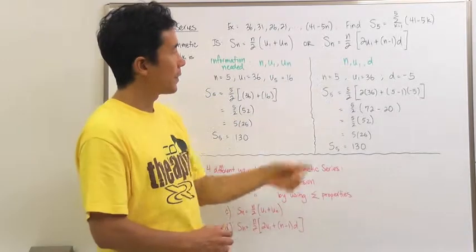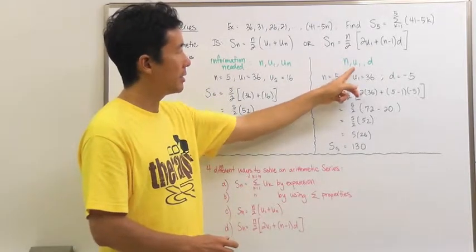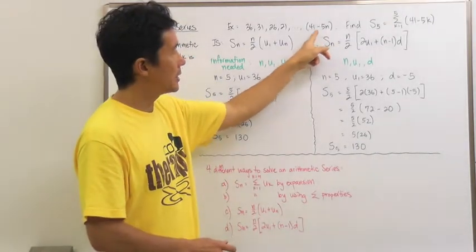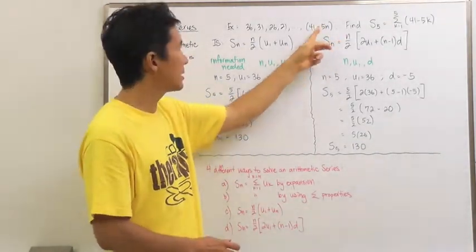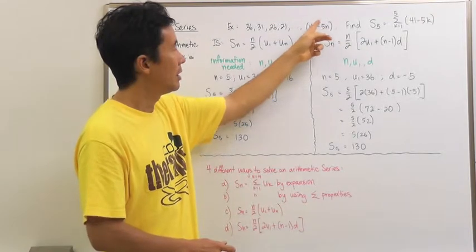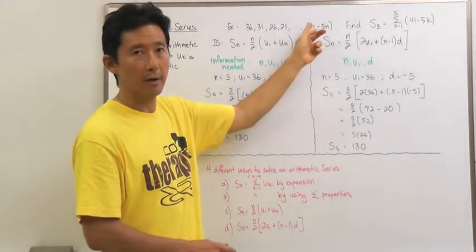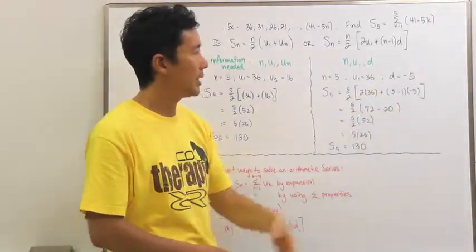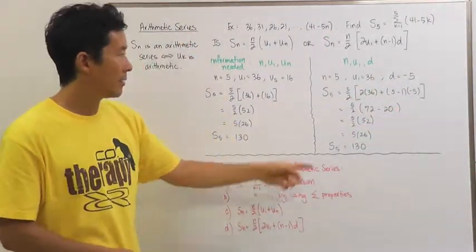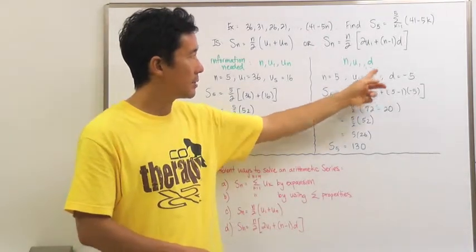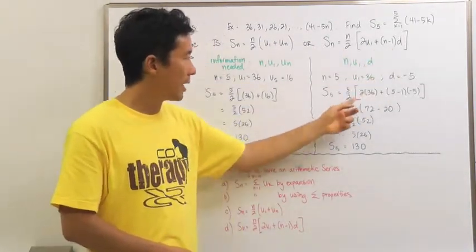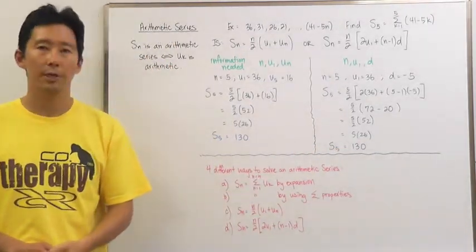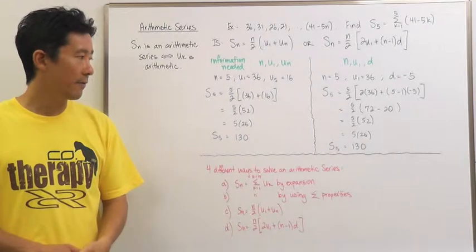On this side, I know N and U sub 1, and I need to find D. Since this is an arithmetic sequence, D is just the coefficient of N in the general term, which is negative 5. Substituting all of those values into the second formula, I come up with again the value of 130 for S sub 5.